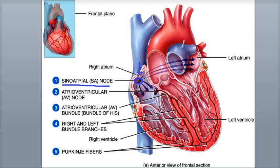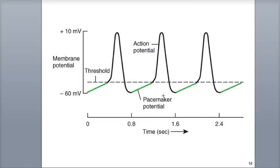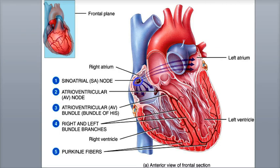The cluster of SA node cells have an unstable resting potential called the pacemaker potential. This is shown on the graph by the green line. They can spontaneously depolarize to threshold, shown by the dotted line, which quickly initiates an action potential that propagates through both the right and left atria, leading to simultaneous contraction of both atria. The SA node serves to set the heart's contraction rhythm, acting as the natural pacemaker.